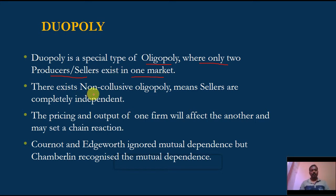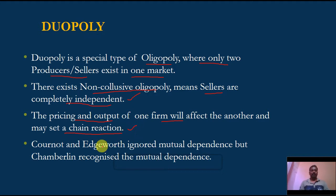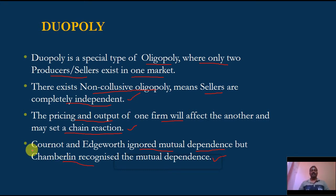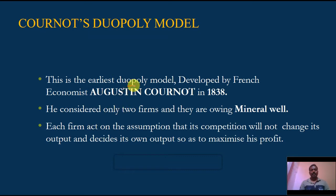This is a non-collusive oligopoly, meaning sellers are completely independent in decision-making. The price and output of one firm does not affect the other — they are independent of each other. Cournot and Edgeworth ignored mutual interdependence, while Chamberlin recognized it. Cournot and Edgeworth say firms are independent in decision-making, but Chamberlin specifically tried to explain that they are mutually dependent.